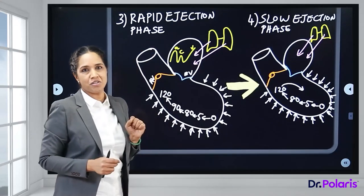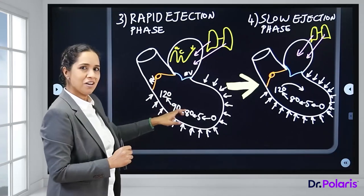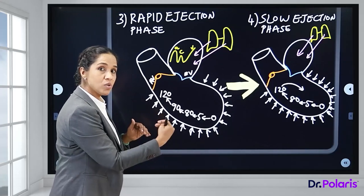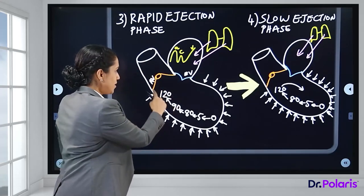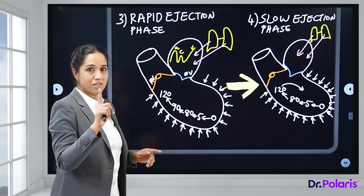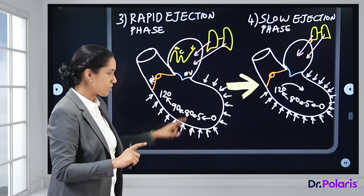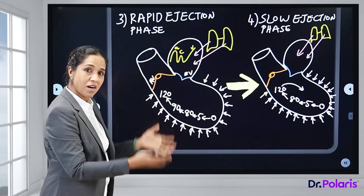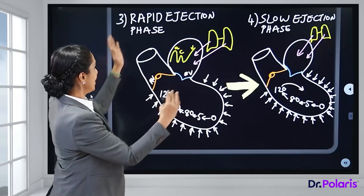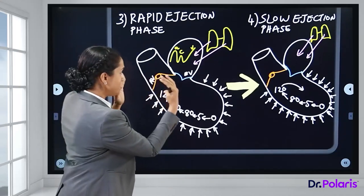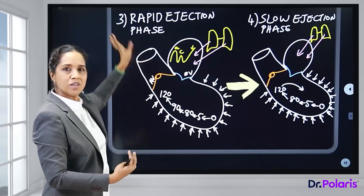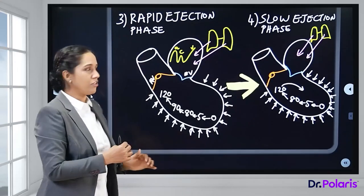Phase 3 — Rapid Ejection Phase: The ventricular pressure has now exceeded the aortic pressure. The aortic valve opens. The ventricle continues contracting — pressure rises from 80 to 90 to 120 mmHg. This is the rapid ejection phase: a major outflow of blood from the ventricle into the aorta occurs, which then carries blood to the rest of the circulation.